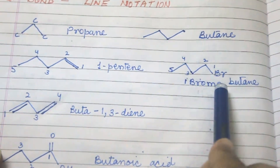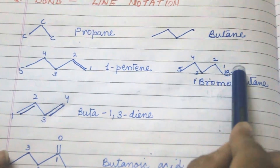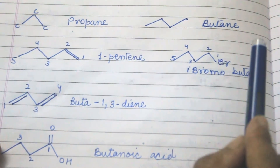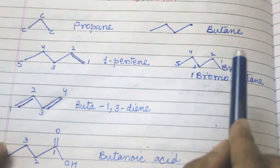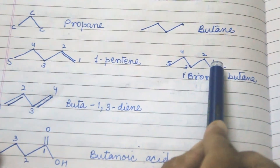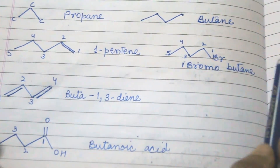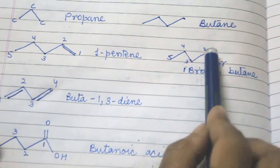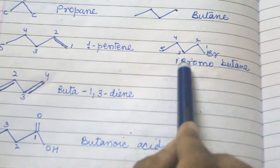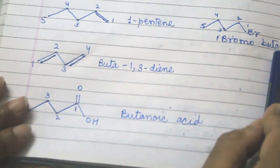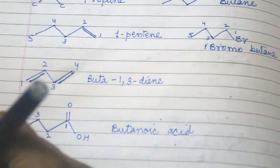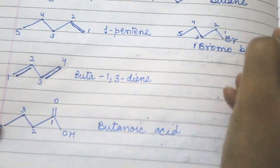Next, bromine is situated here so we number from that end, as it is the functional group. The name is 1-bromopentane — five carbon atoms.